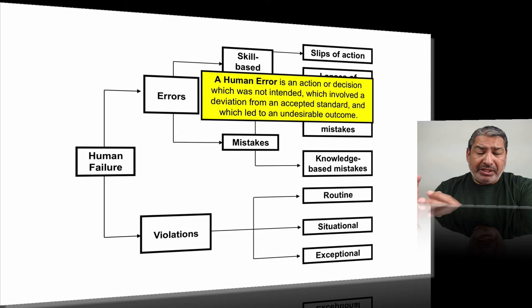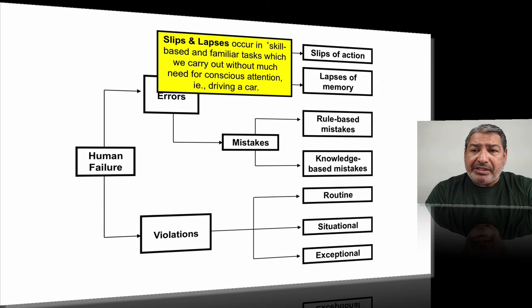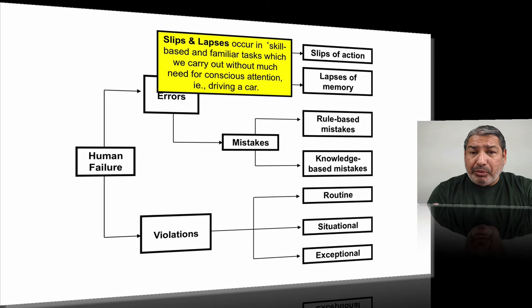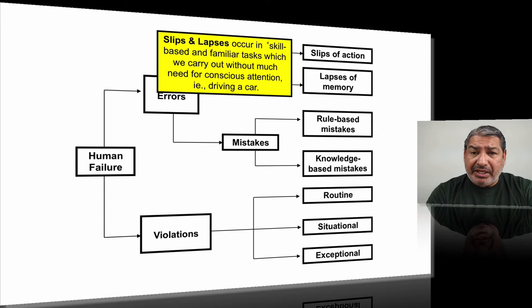Skill-based errors come in two types: slips of action and lapses of memory. These normally occur when we're doing something familiar, like driving a car — you're not paying conscious attention. In our world, lone working is a primary example: people who go out into the community late at night, it just becomes the accepted standard and their situational awareness drops. Then all of a sudden they become a victim of a potentially violent crime — like the case of Jenny Morrison, that poor woman who was stabbed to death by Anthony Joseph.